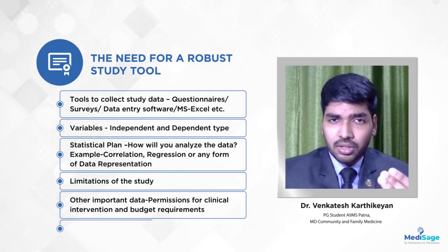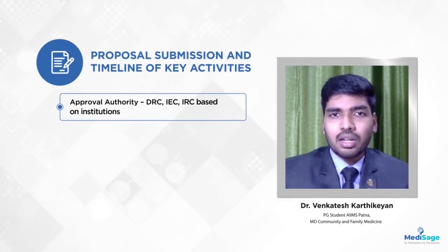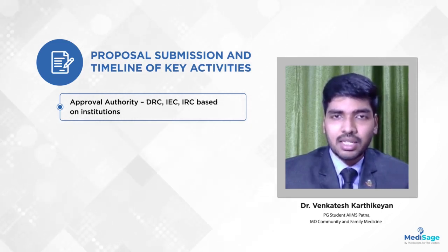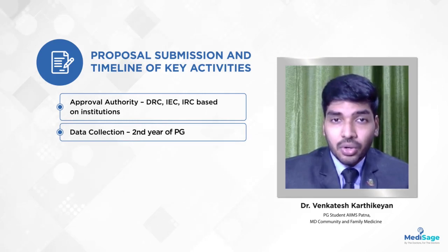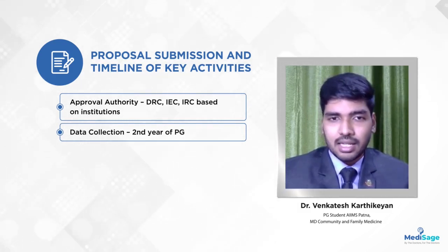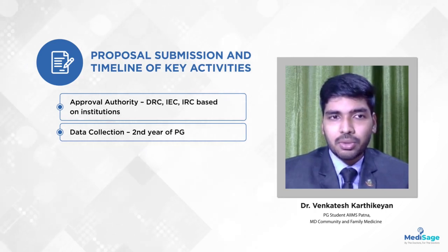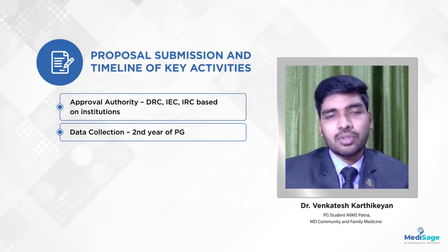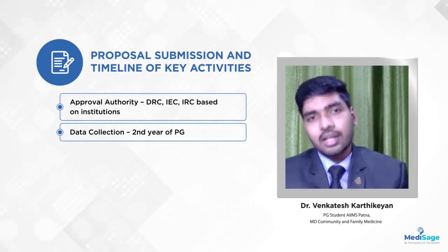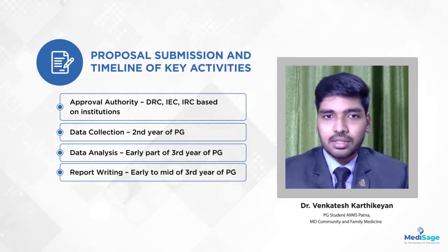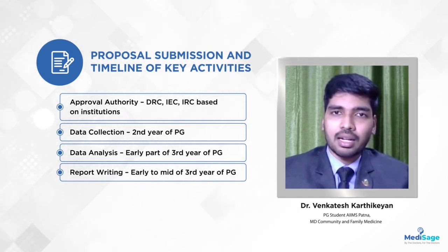Once you prepare a proposal with all the headings mentioned above, submit it to the DRC — Department Research Committee. After discussion in the DRC, it will be sent to the IRC and IEC — the Institute Research Committee and Institute Ethics Committee. Once you get clearance from the Ethics Committee and Research Committee, you can proceed with data collection. You should not start data collection before approval from the IEC and IRC.